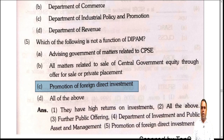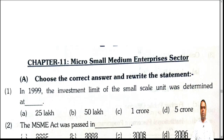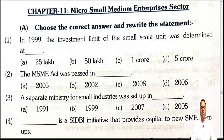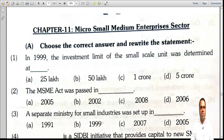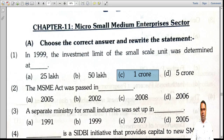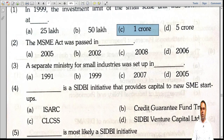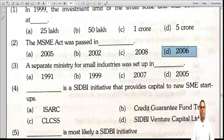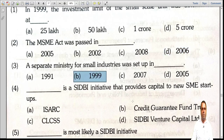Moving on to the next chapter: Micro, Small and Medium Enterprises sector. Question 1: In 1999, the investment limit of the small scale unit was raised to 1 crore from 25 lakh. The MSME Act was passed in the year 2006 — known as the MSMED Act 2006. A separate ministry for small industries was set up in 1999.